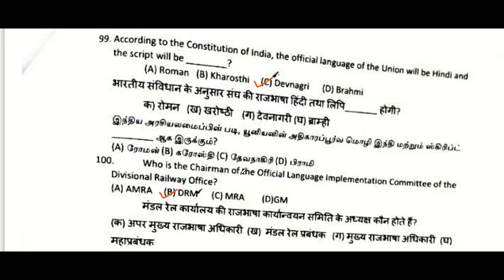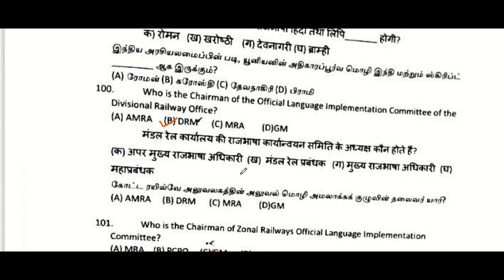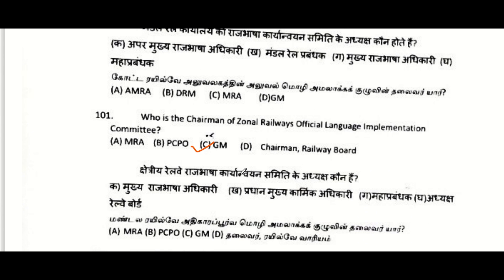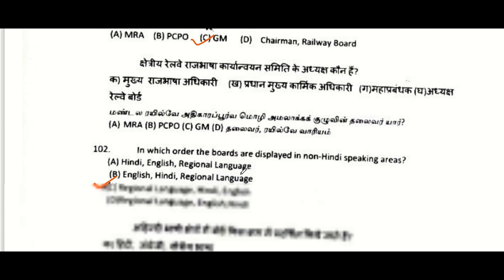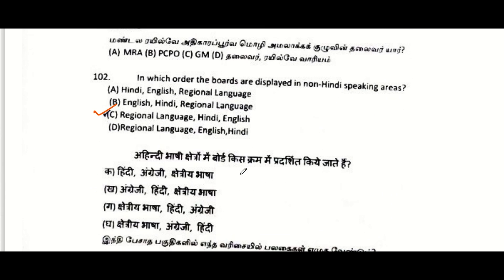According to the Constitution of India, the official language of the Union will be Hindi and the script will be Devanagari. Chairman of the official language implementation committee of the division railway office: DRM. Chairman of the general railway official language implementation committee: GM. In non-Hindi speaking areas, boards are displayed in this order: first original language, then Hindi, then English.